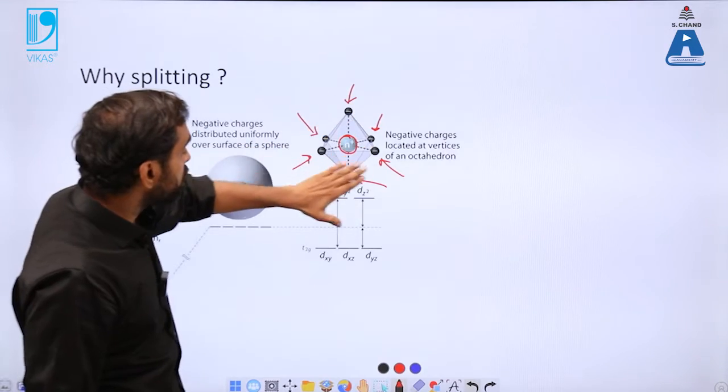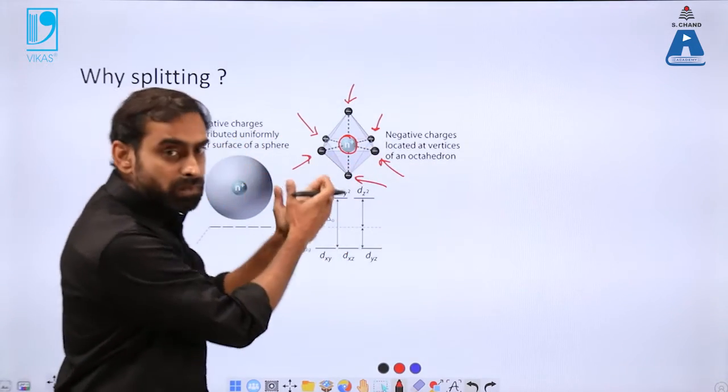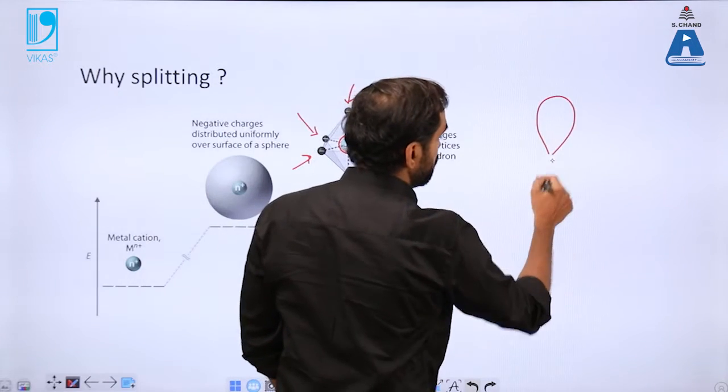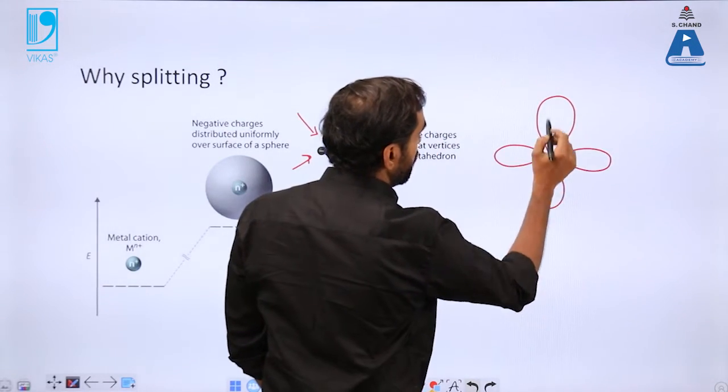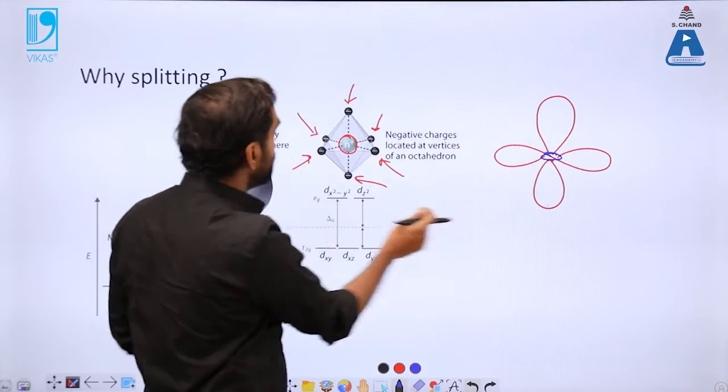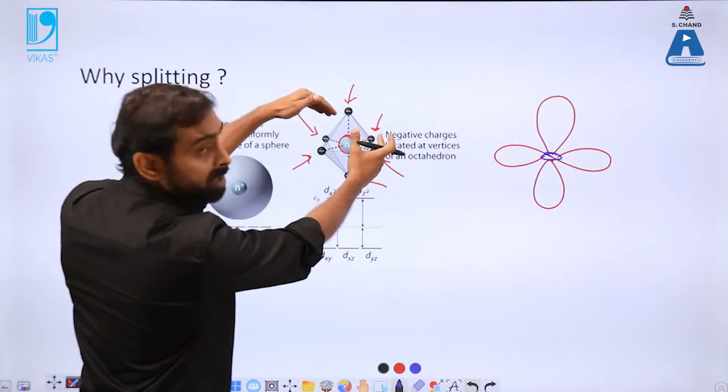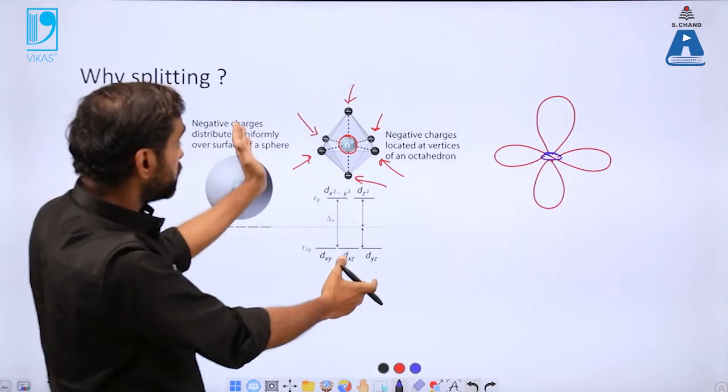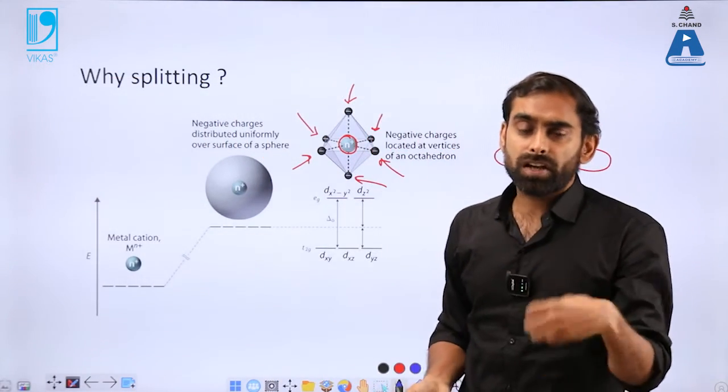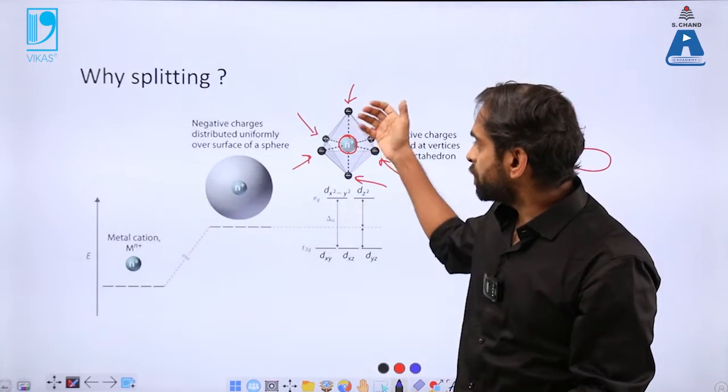So depending on which metal ion interacts much closer with the d sub shell, if you can closely look at the structures of d sub shells, one of the d orbital will be interacting more with one of the ligand and another d orbital will be interacting with another ligand.